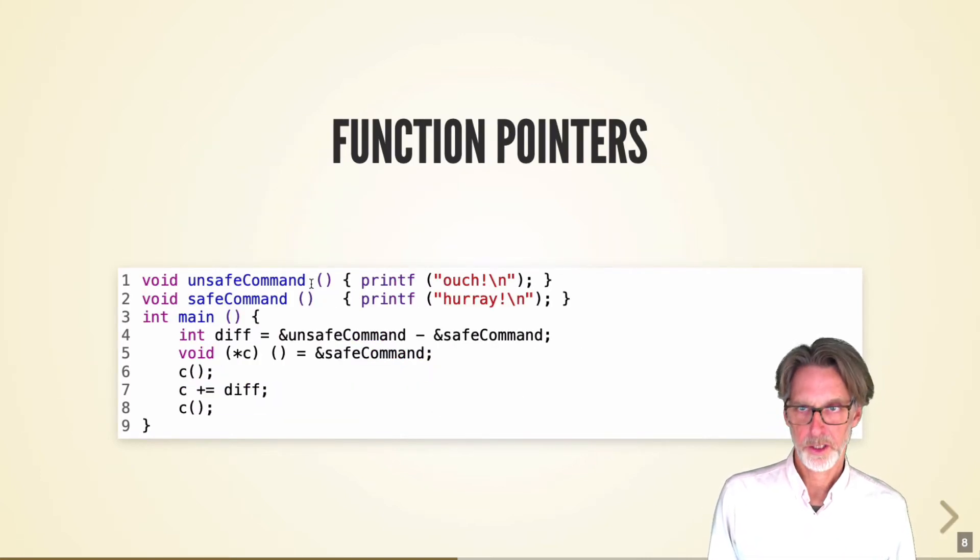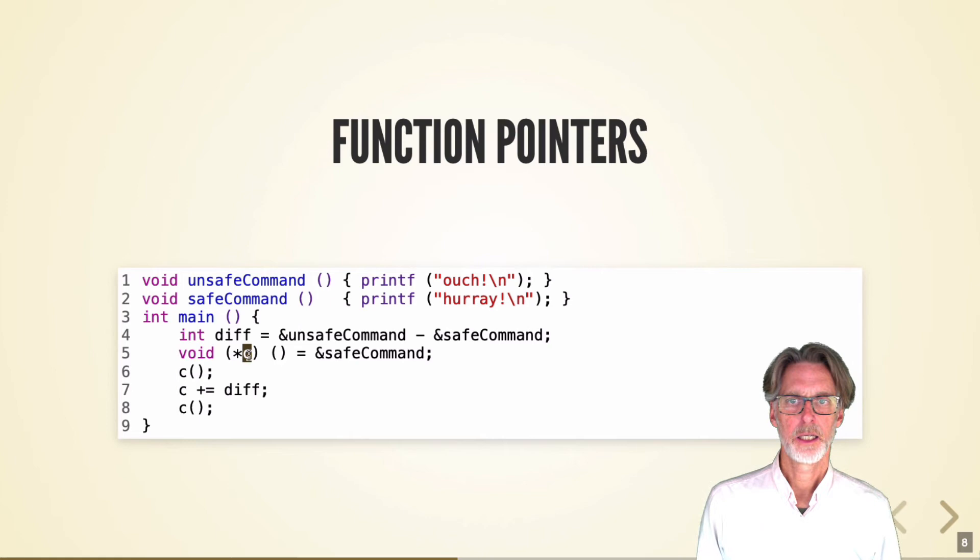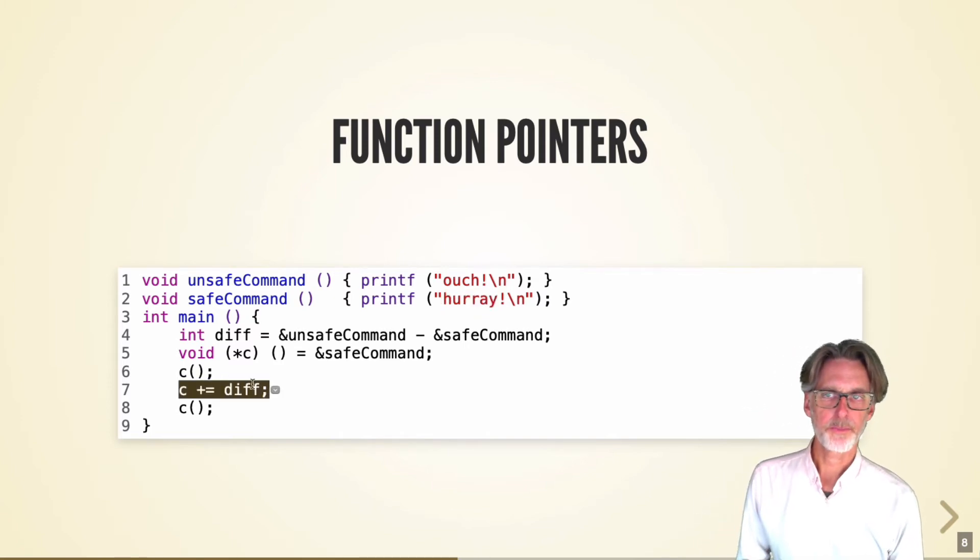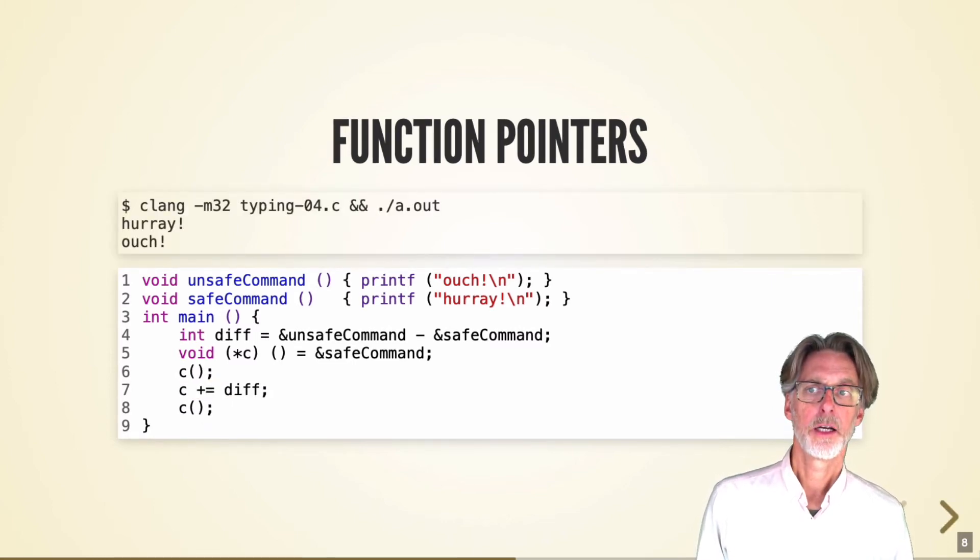We can also play this game with function pointers in C. So here's two functions, one called unsafe command, one called safe command. And what I'm going to do is create a pointer here called C to point to the safe command. When I invoke it, I expect the safe command to execute. Hooray! However, with pointers in C, I can do something called pointer arithmetic. So what I'm going to do is just move this pointer a little bit. But I'm going to move it to be the difference between the positions of these two pointers, the safe command and the unsafe command. And so as a result, C will now point to the unsafe command. And so when I run it the second time, I get ouch.